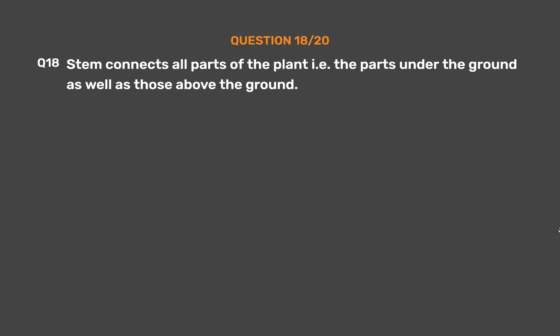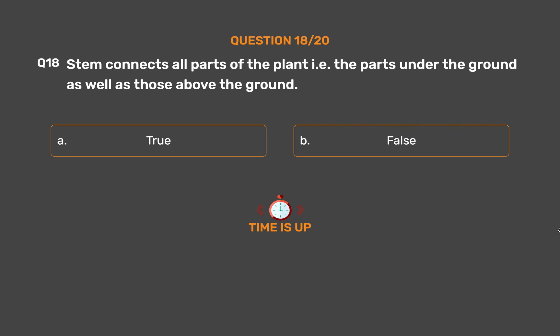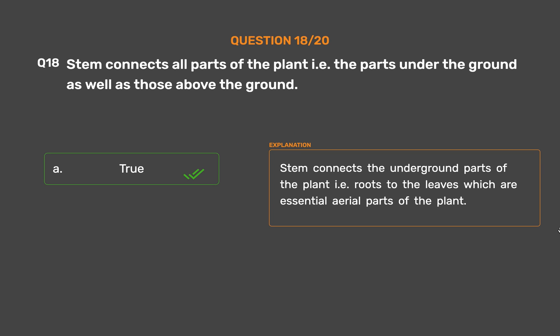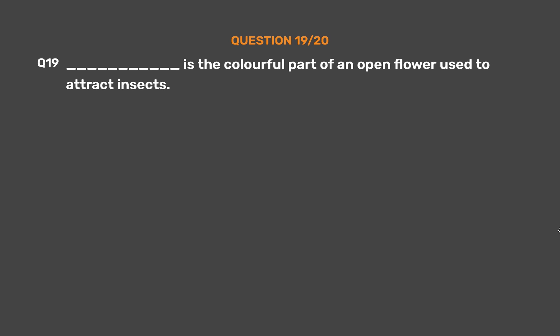Question 18 (True or False): Stem connects all parts of the plant — the parts under the ground as well as those above the ground. Option A: True, Option B: False. The correct answer is Option A, True. The stem connects the underground parts of the plant, i.e., roots, to the leaves, which are essential aerial parts of the plant.